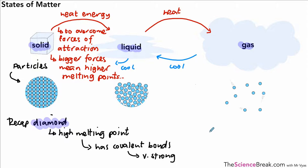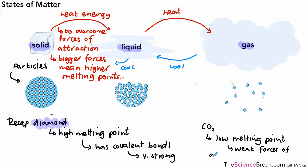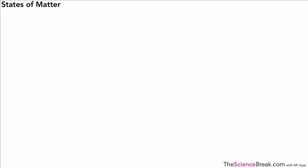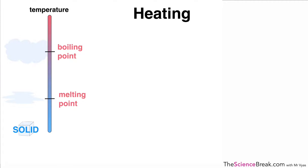On the other hand, carbon dioxide is a covalent substance, but it's a simple molecule and has a low melting point — even though it's covalent. The reason is that there are weak forces of attraction between the molecules, so only a small amount of energy is needed to overcome those weak forces. For diamond we have covalent bonds holding the particles together; for CO₂ we have weak forces of attraction between the CO₂ molecules.